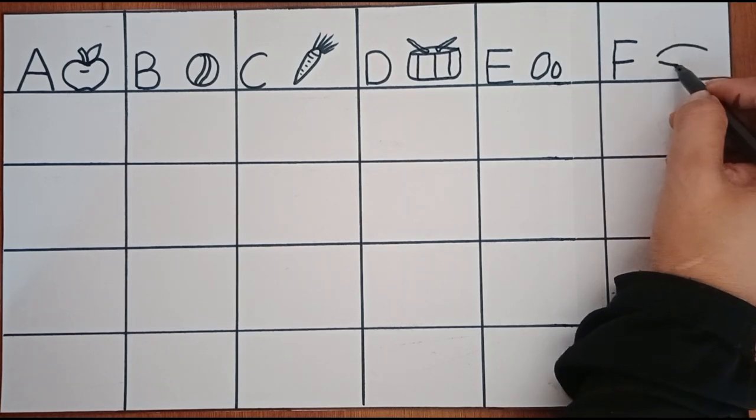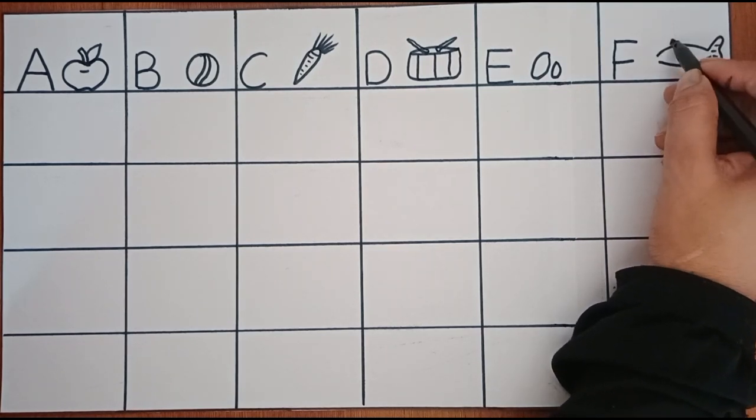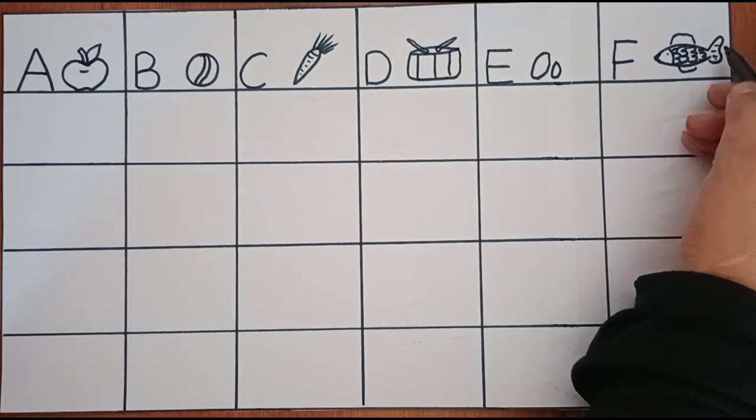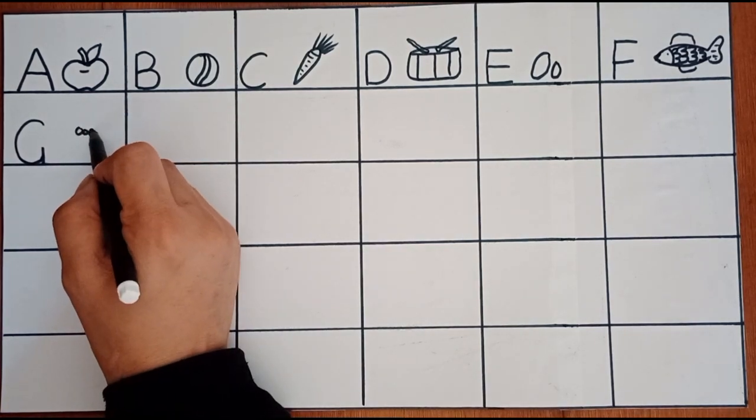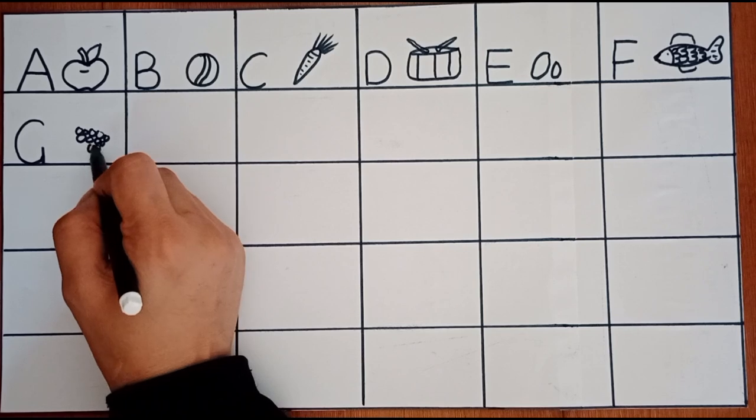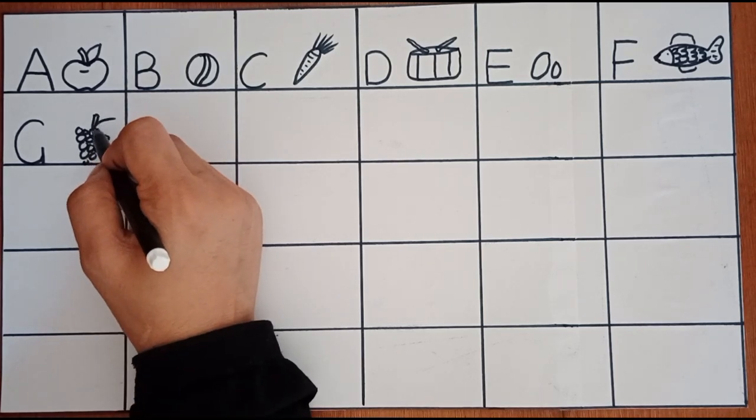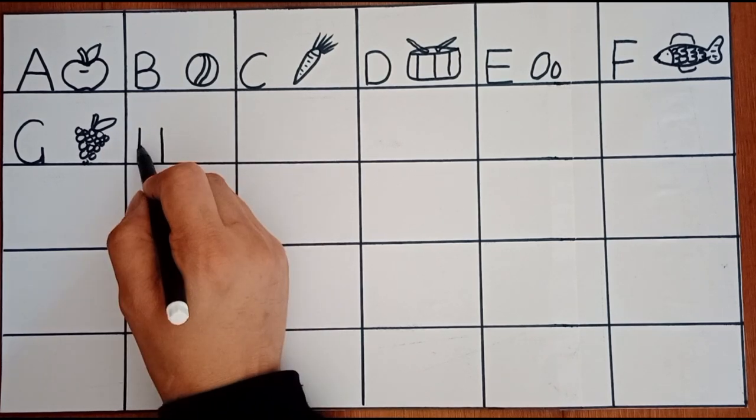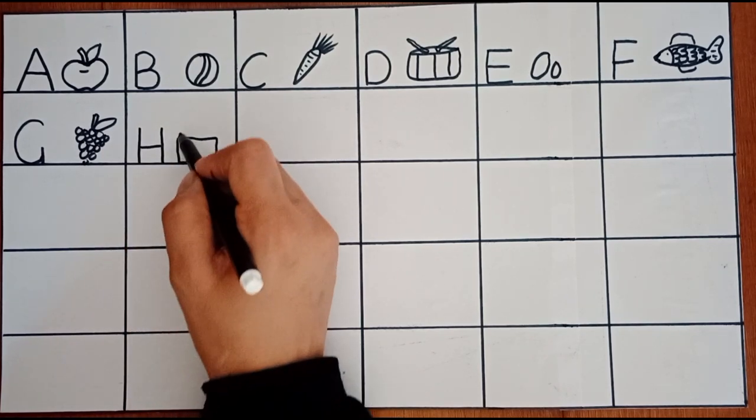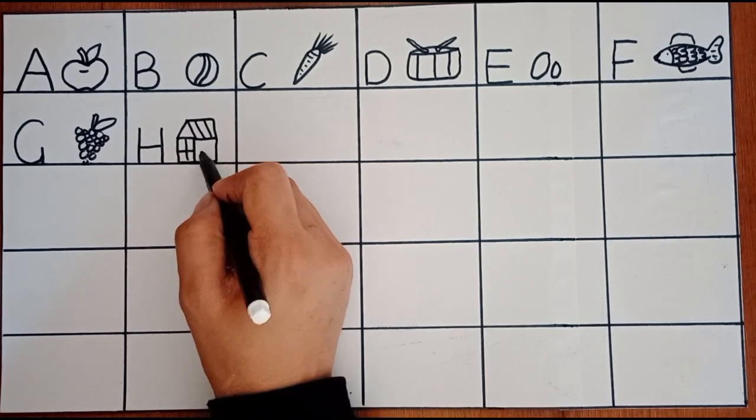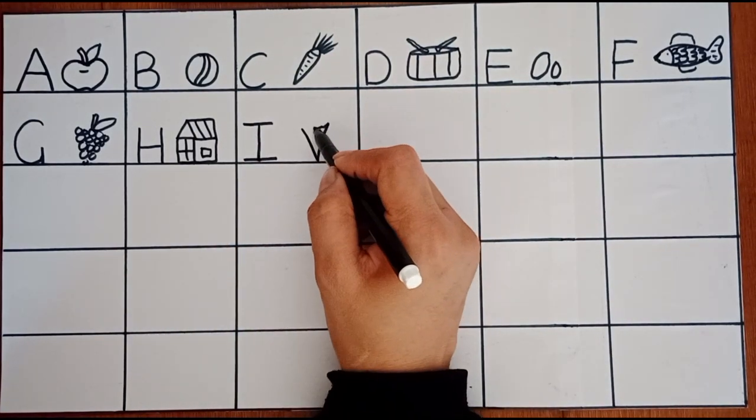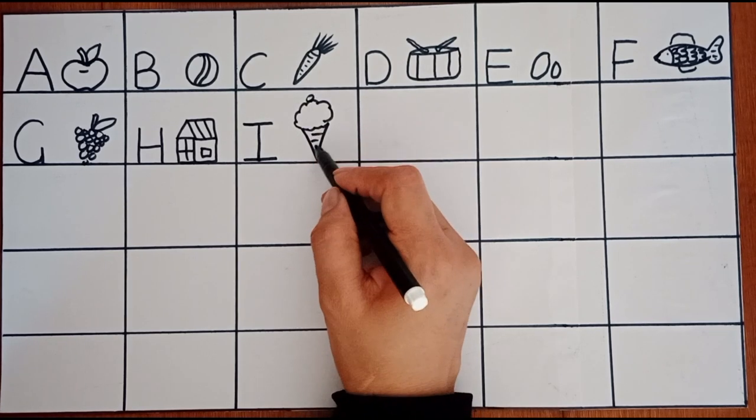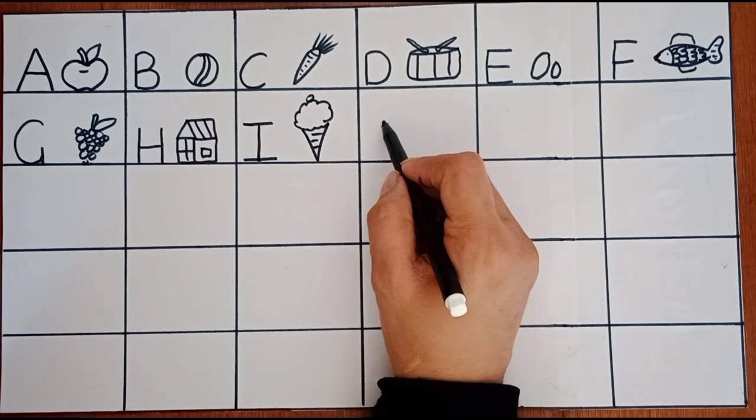F for fish. G for grapes. H for house. I for ice cream. J for jug.